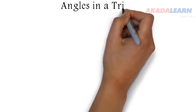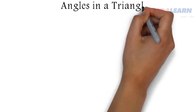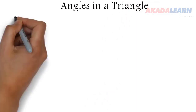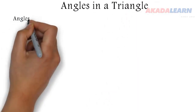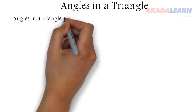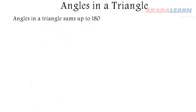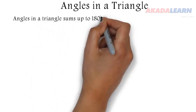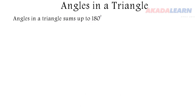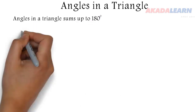So let's look at angles in a triangle. The sum of angles in a triangle adds up to 180 degrees. That symbol there is for degrees.